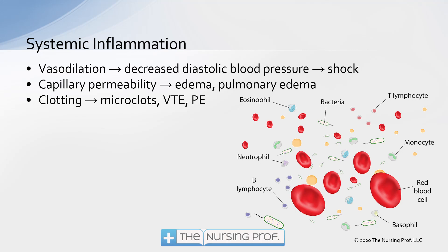If this inflammation is systemic throughout the entire body, vasodilation will cause a drop in blood pressure — specifically diastolic blood pressure. The diastolic is a reflection of the vasculature primarily, whereas the systolic is primarily a function of cardiac output. The patient will develop shock, with blood pressures like 80 over 40 or 80 over 30 — that really low diastolic. By contrast, hypovolemic shock would show a pressure like 80 over 60, a narrow pulse pressure.